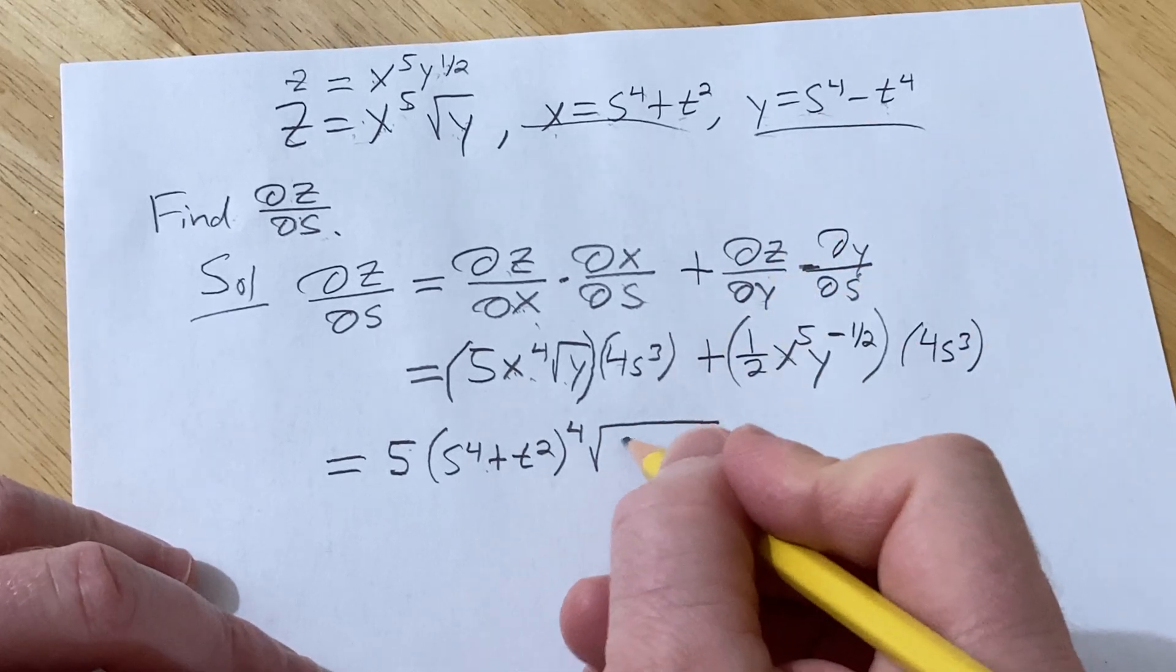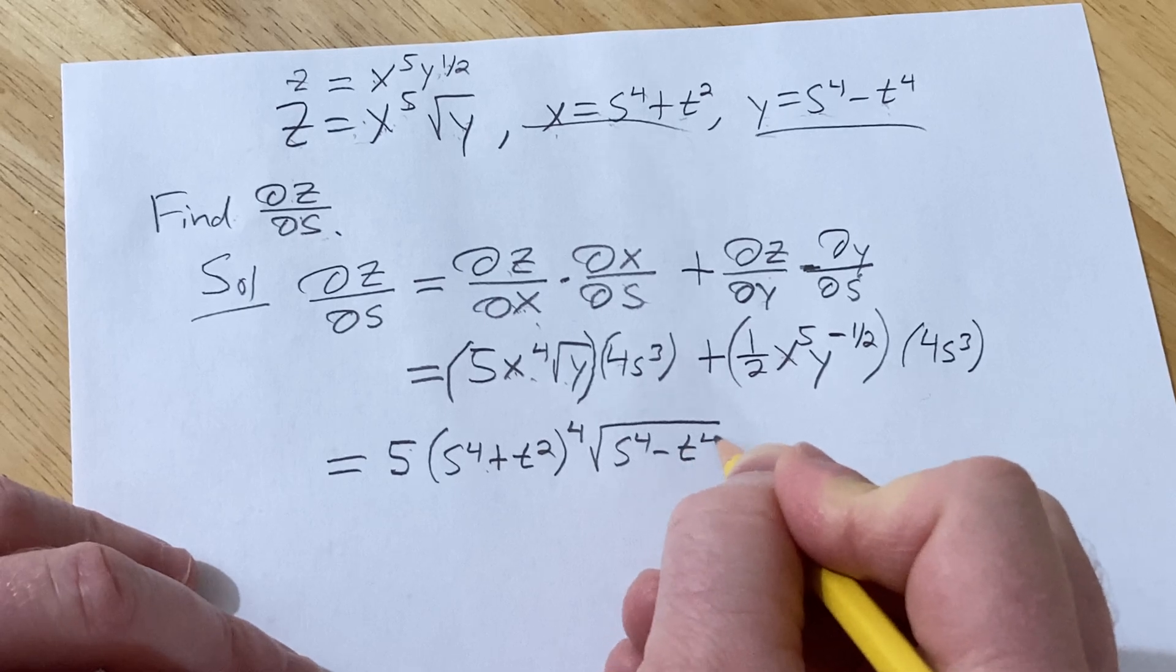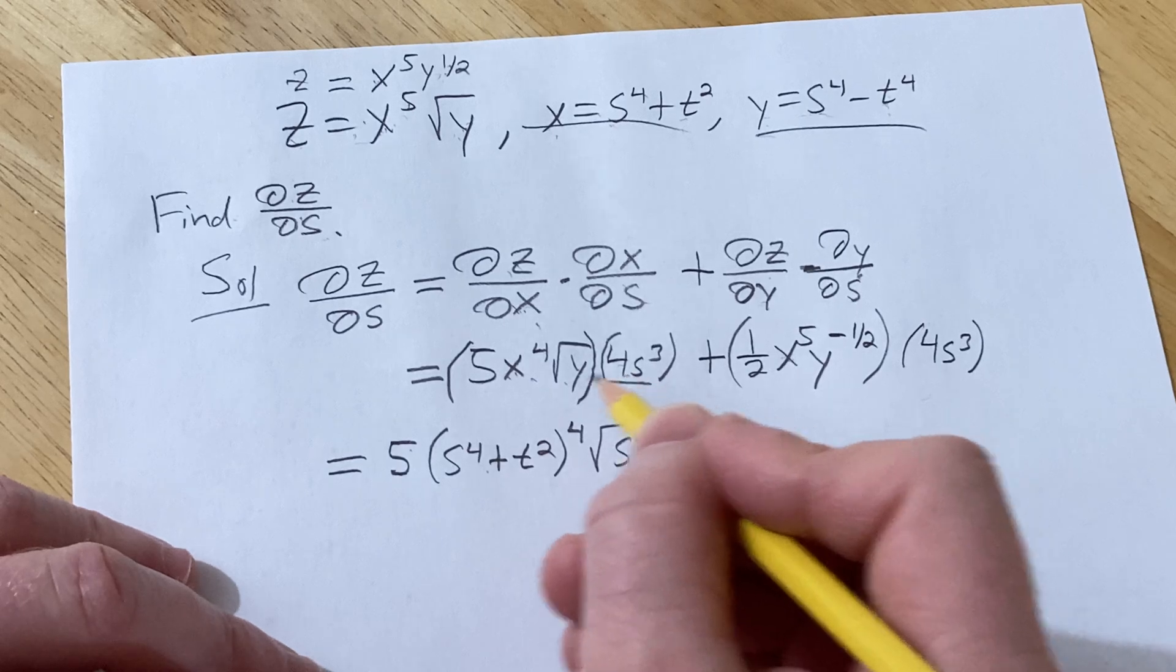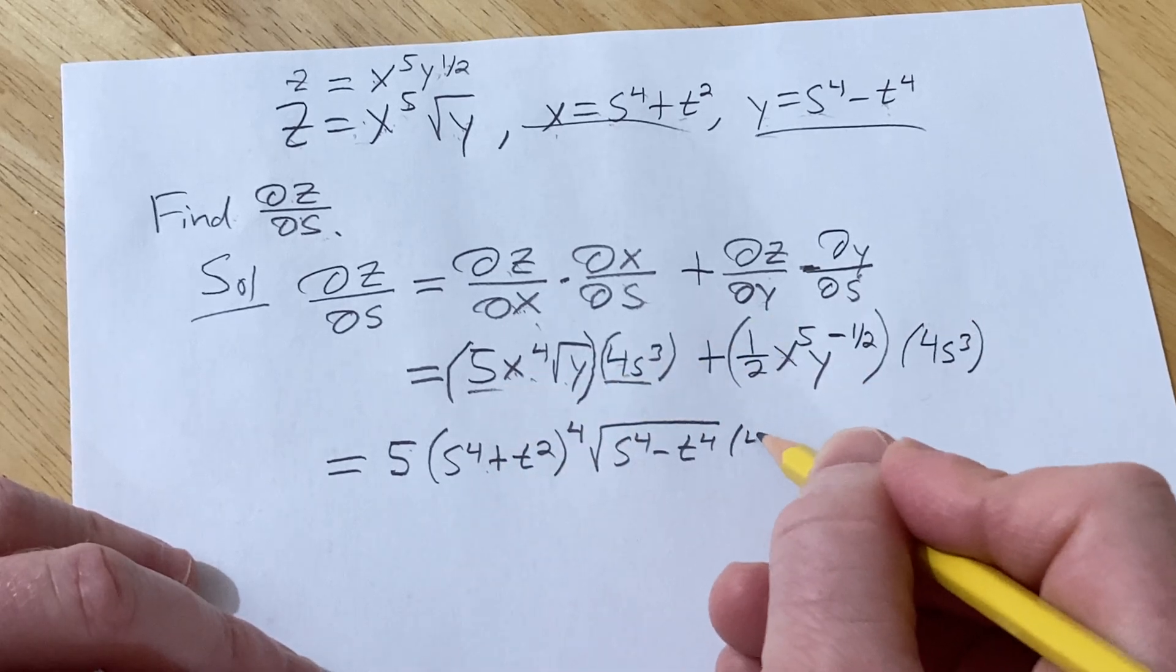Y is s to the fourth minus t to the fourth. Okay and then we still have this 4s cubed. I forgot to multiply, I meant to multiply these but I'll do it in the next step. 4s cubed.